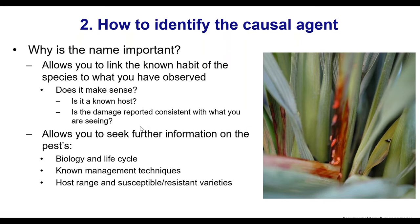Identification allows you to gain information on the biology and life cycle — things that people have recorded and reported online or in the scientific literature on what pests normally do. When are they active? What management techniques are effective or ineffective? Because the ones that are ineffective are just as important to know as the effective ones. Knowing the host range and susceptible or resistant varieties is critical — that sort of information can provide a wonderful way of managing your pest.